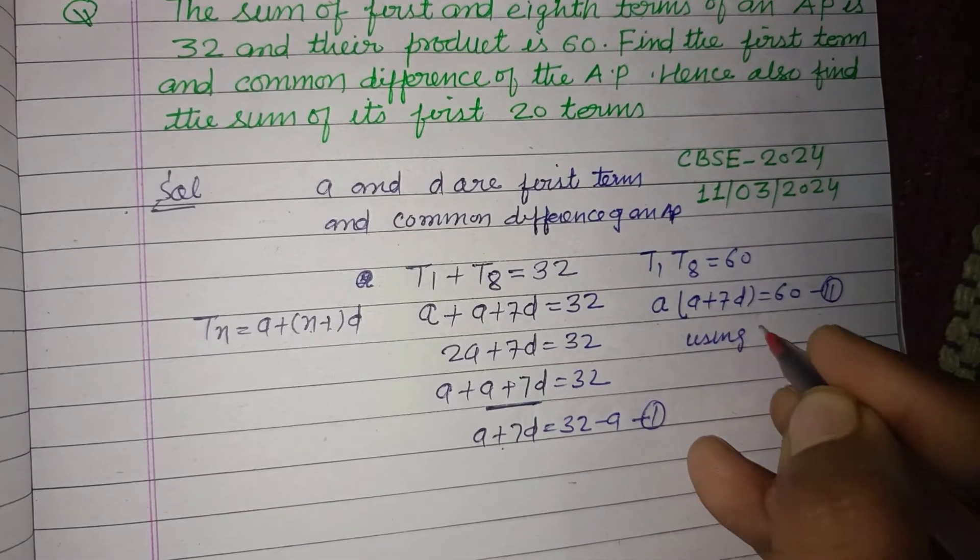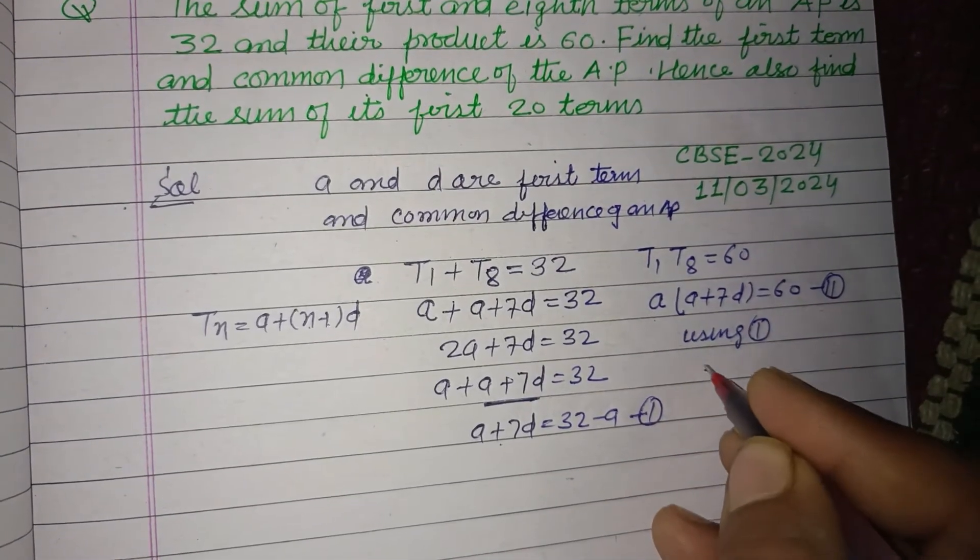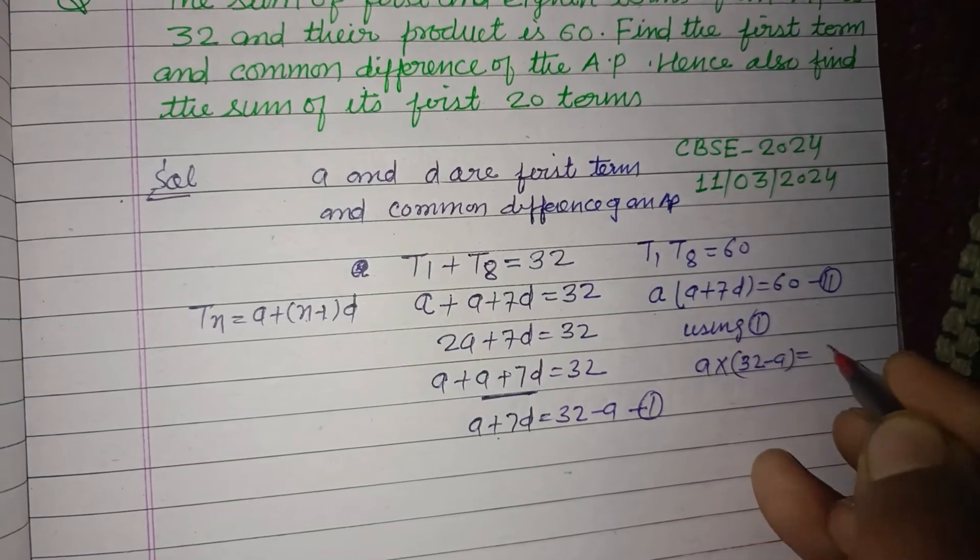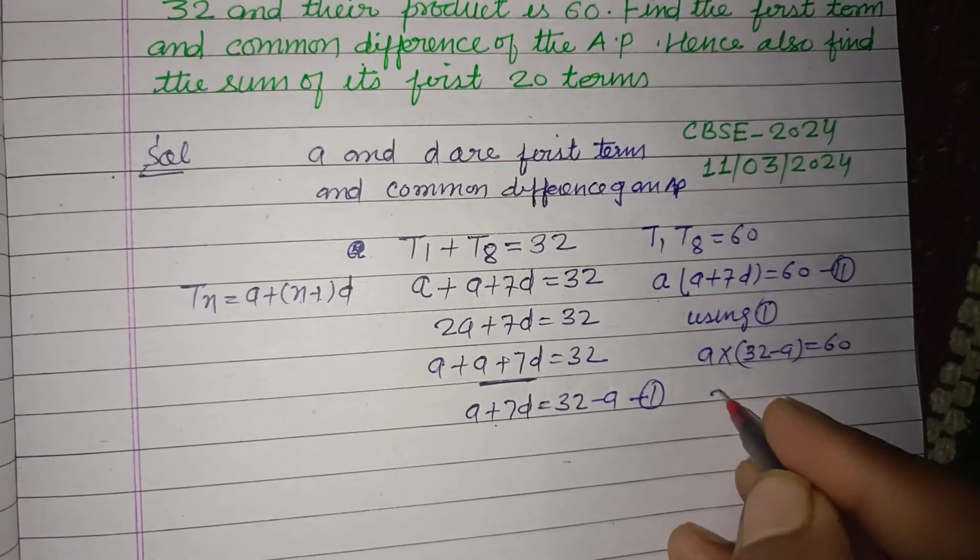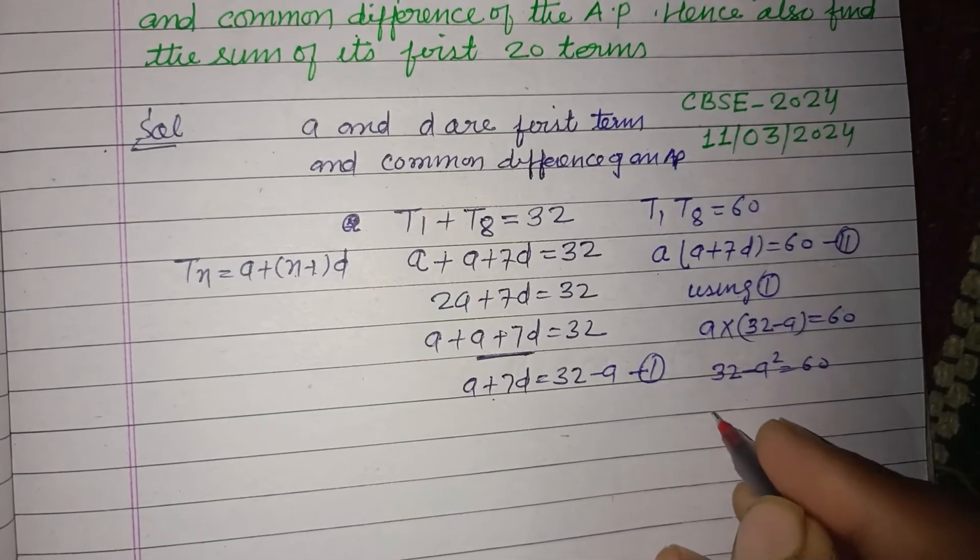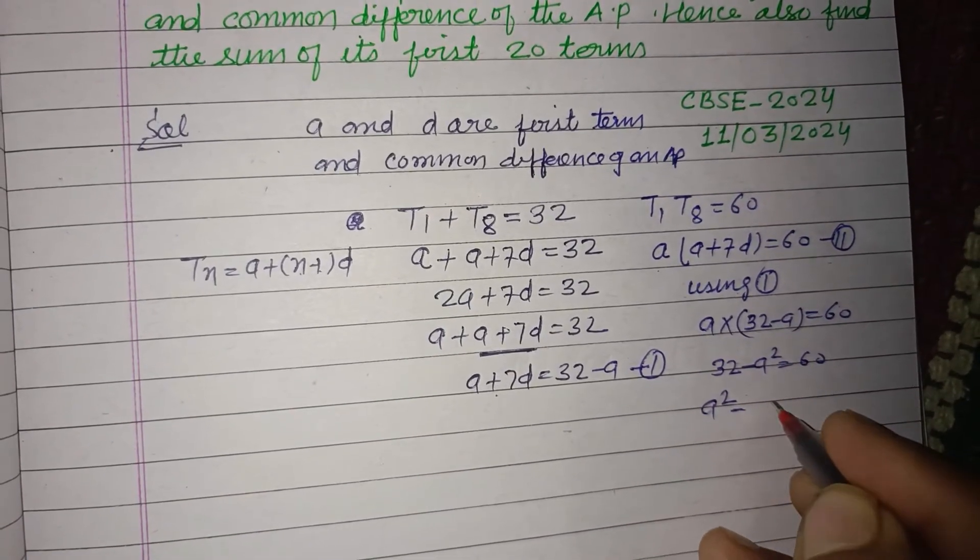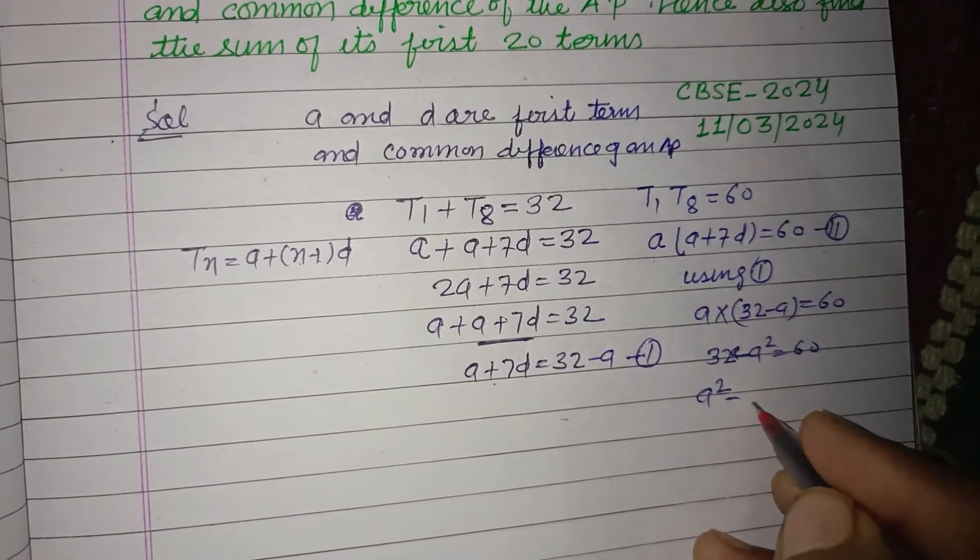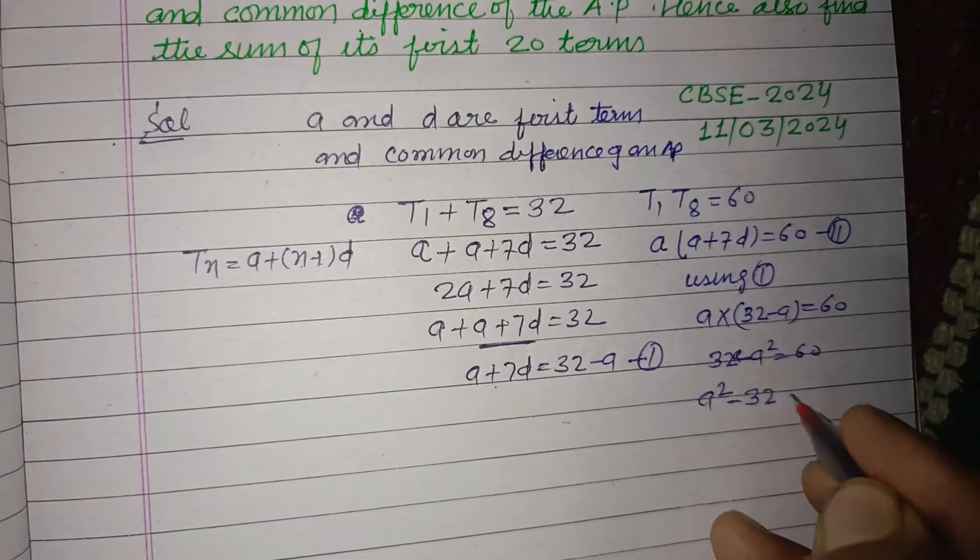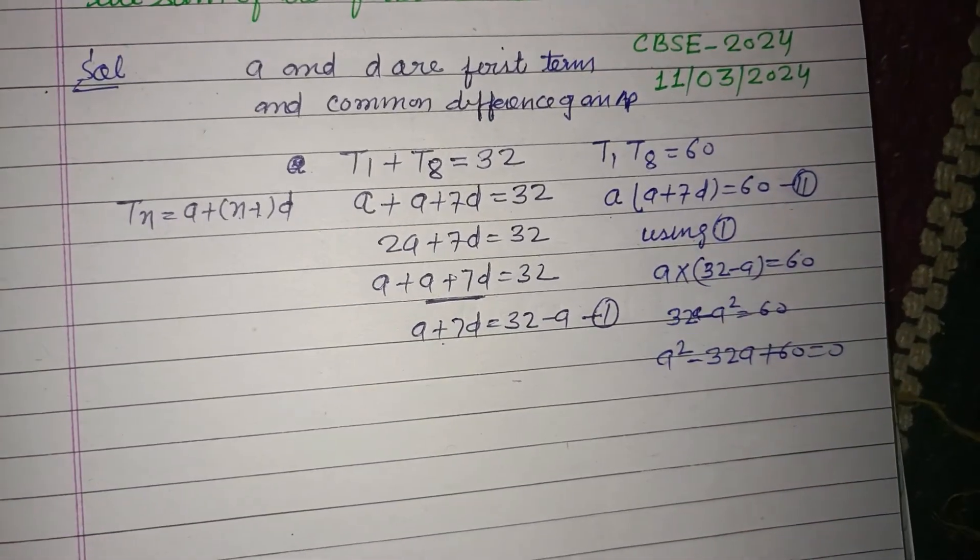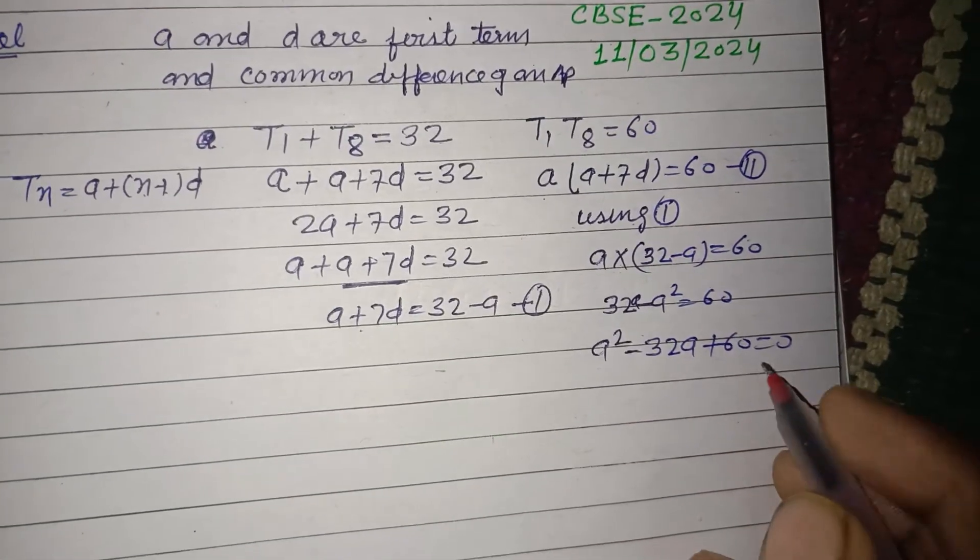Using the first equation, we put the value: a into 32 minus a equals 60. So 32a minus a squared equals 60, which gives us a squared minus 32a plus 60 equals 0.